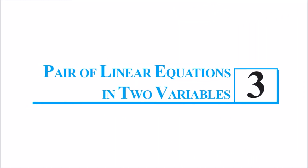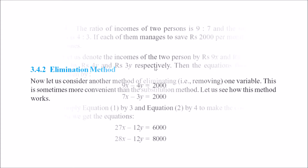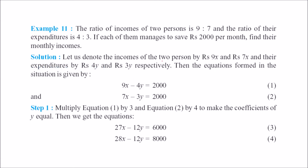We are discussing Chapter 3, Pair of Linear Equations in Two Variables, of Class 10 Mathematics. Now let's look at the elimination method. In the elimination method, we try to remove one variable. When we remove one variable, we can find the value of the second variable. All the methods shown here can be used — you pick whichever is most convenient.